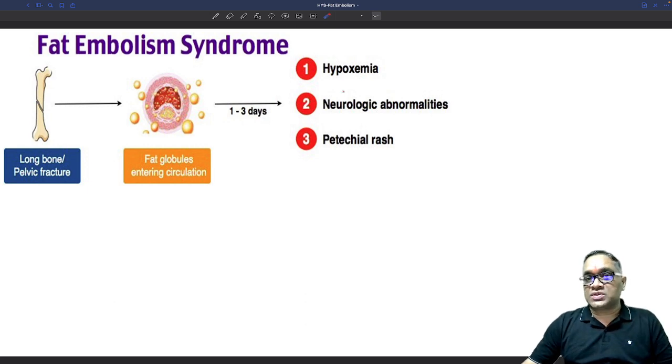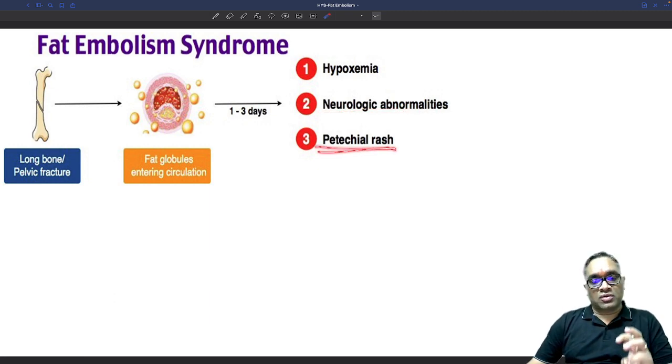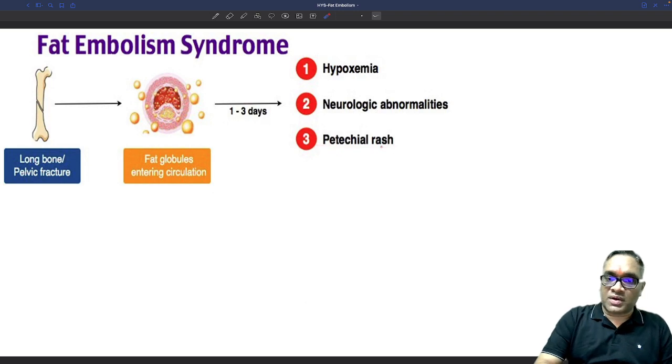After that, they will have three characteristic features: hypoxia, neurological abnormalities like headache, seizure or neurological alterations, and petechial rashes on the skin.